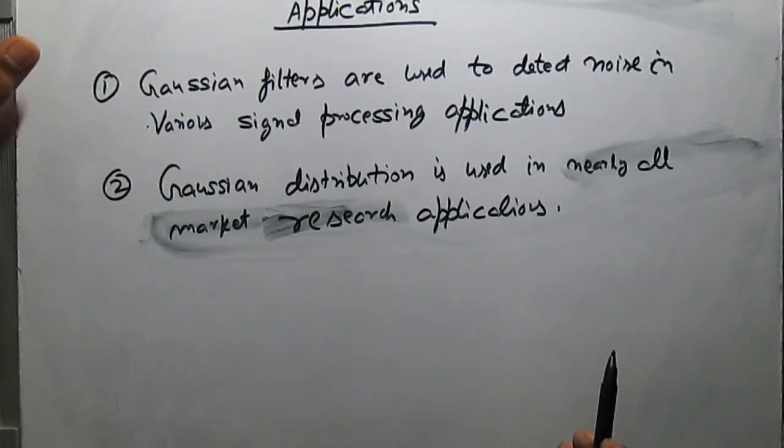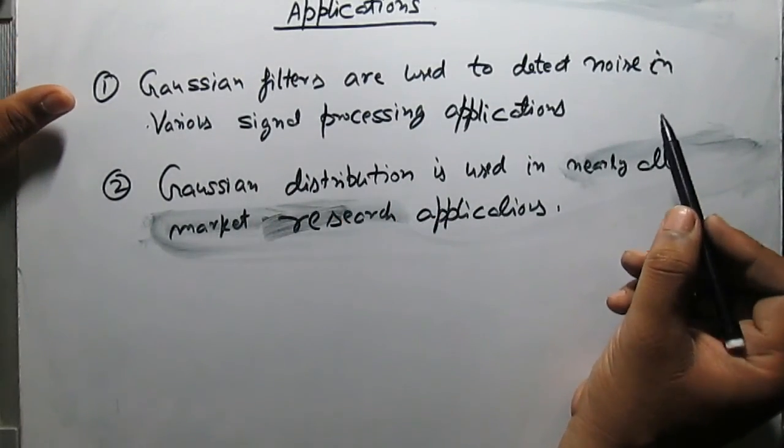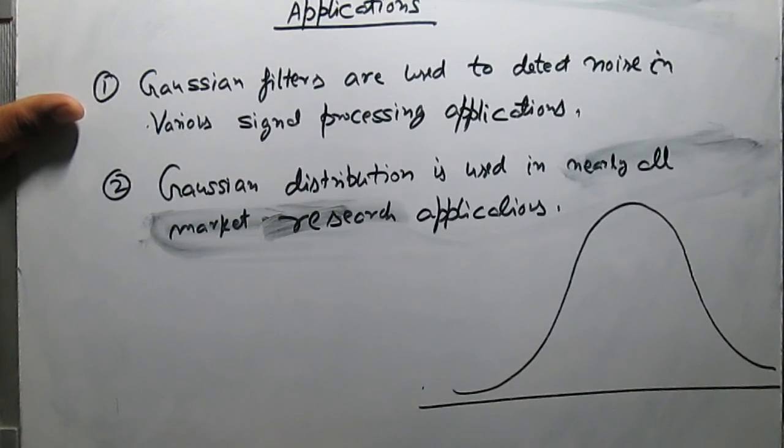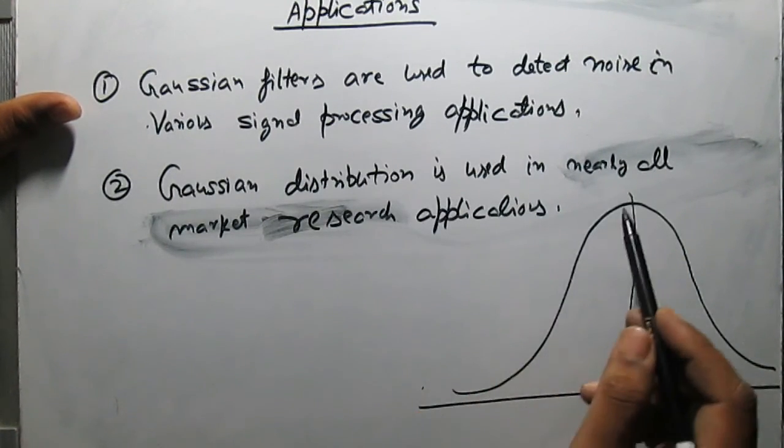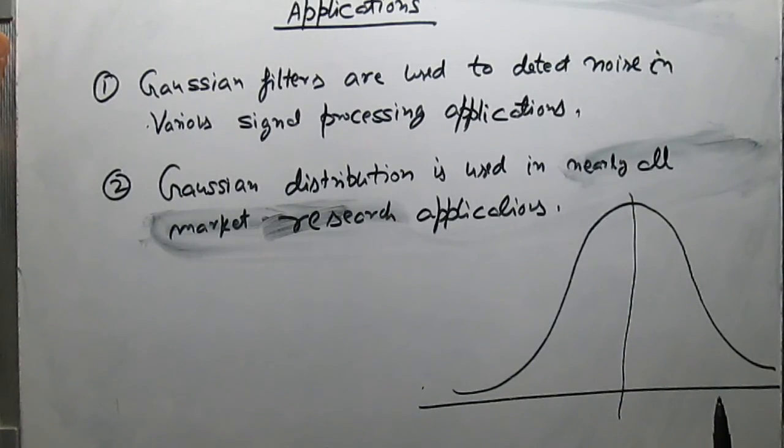There are lots of applications of Gaussian. Gaussian filters are used to detect noise in various signal processing applications because noise elements are independent of each other and these elements follow the Gaussian distribution. We can filter noise easily using Gaussian. Gaussian distribution is also used in nearly all market research applications, for example advertising, production, etc. Thank you.